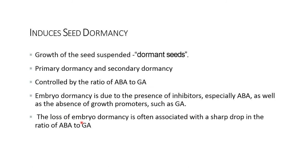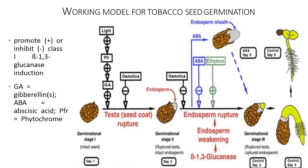The loss of embryo dormancy is often associated with a sharp drop in the ratio of abscisic acid to gibberellic acid. Working model for tobacco seed germination: the plus sign represents a positive effect, helping in promoting seed germination, whereas the negative sign leads to inhibition of seed germination.